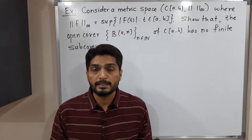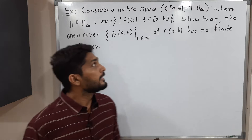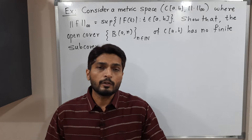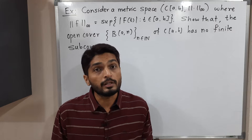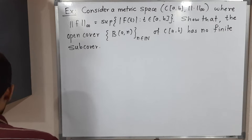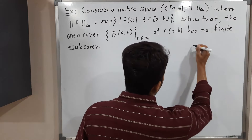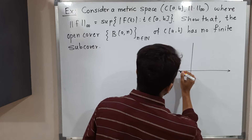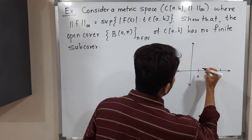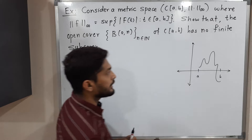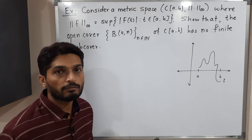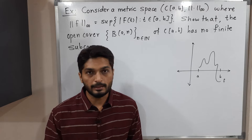Let us talk about what is the metric space C[A,B] and what is the norm-infinity. C[A,B] means the set of all continuous functions defined on the closed interval [A,B]. So if you have any continuous function F defined on the closed interval [A,B], then it is a member of C[A,B].